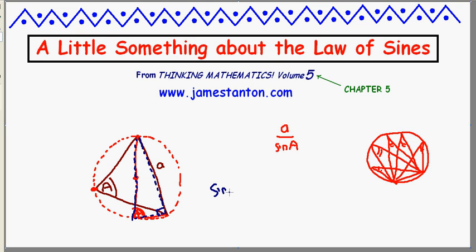If I look at this blue triangle now, I see that sine of big A would be the opposite, A, over the hypotenuse of this big triangle, which is the diameter of the circle. Rearranging, this tells me the diameter of the circumcircle of the triangle is actually A divided by sine of A.